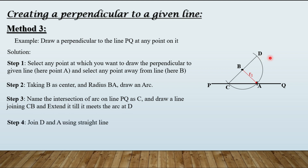Step four, the last one: join D and A using a straight line. The line DA is the required perpendicular to the given line PQ.